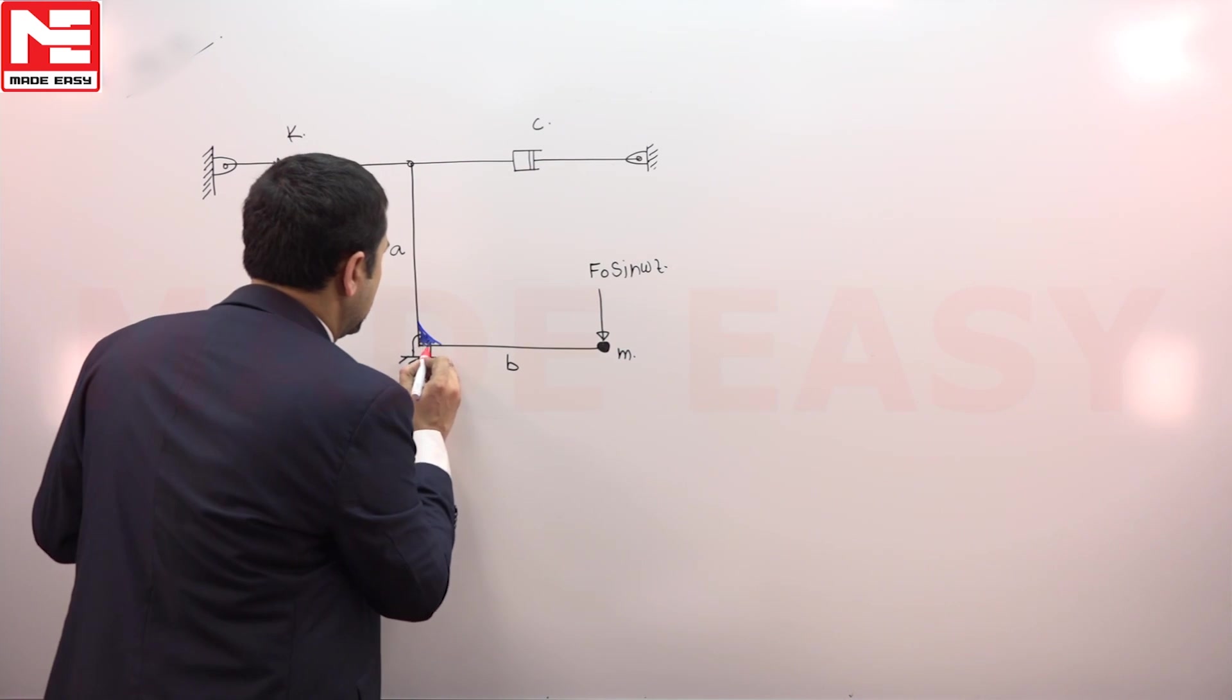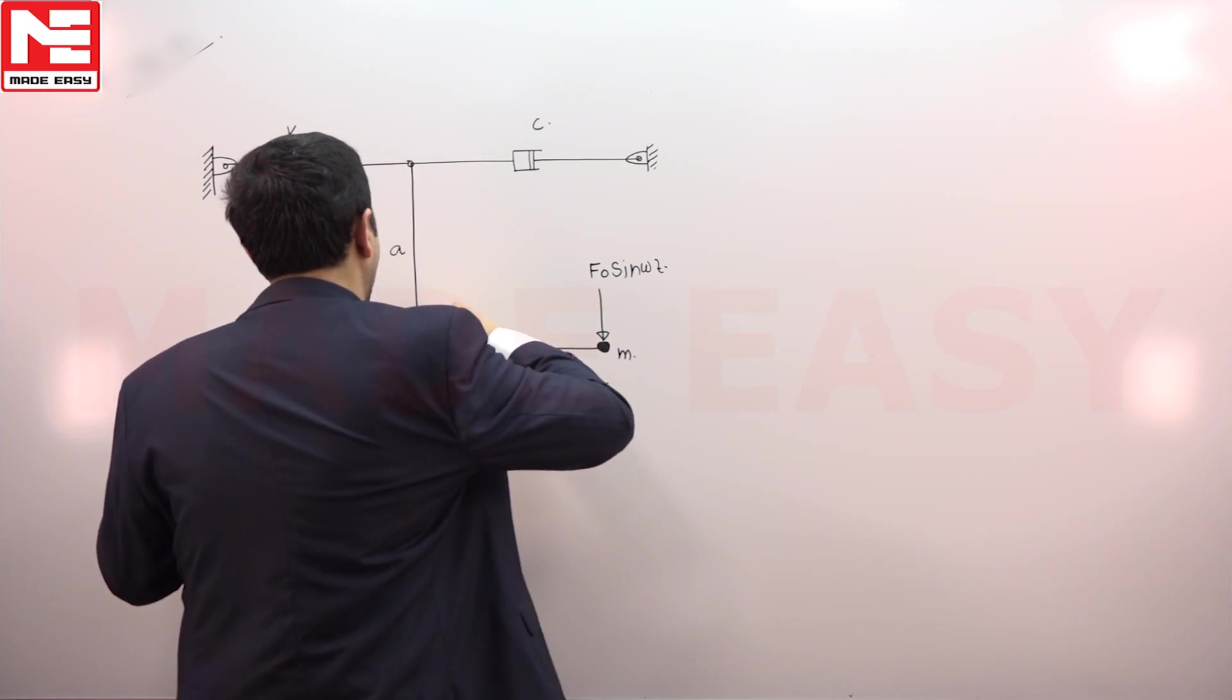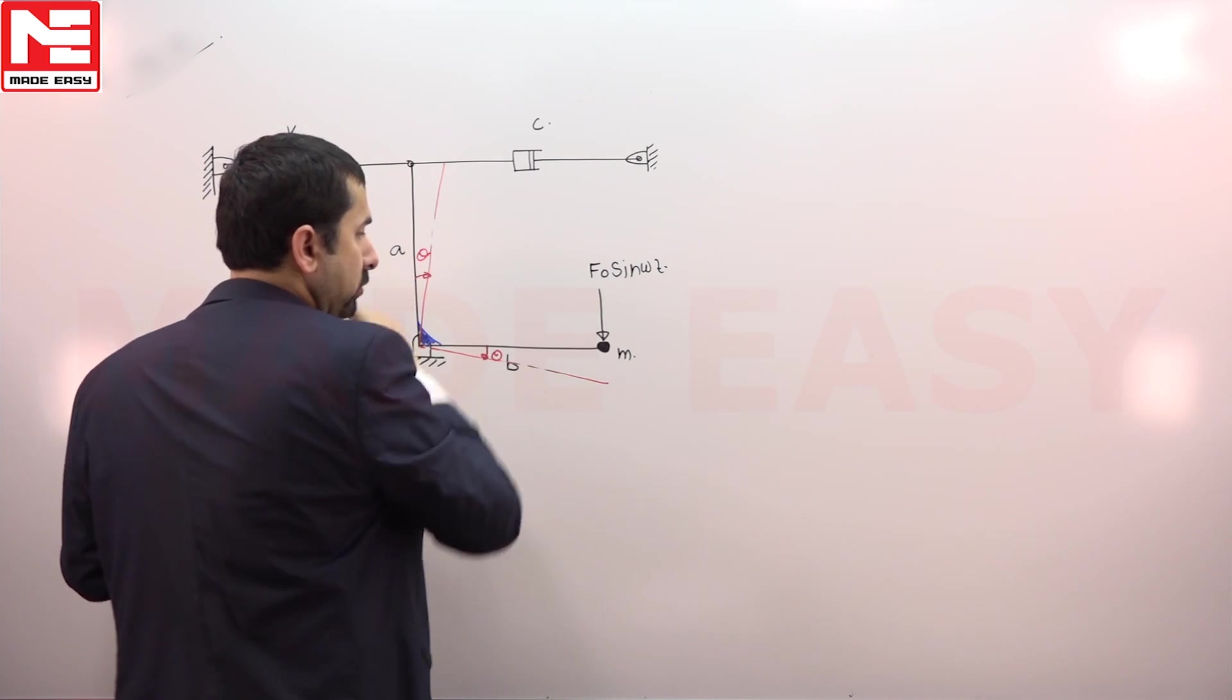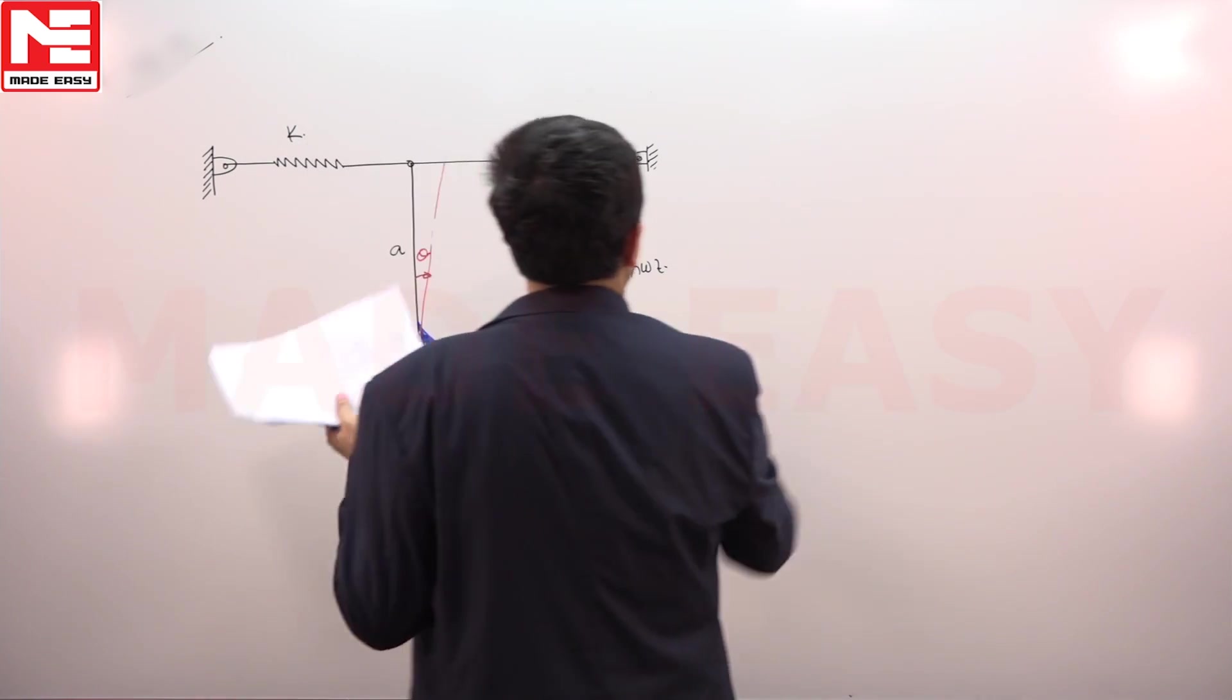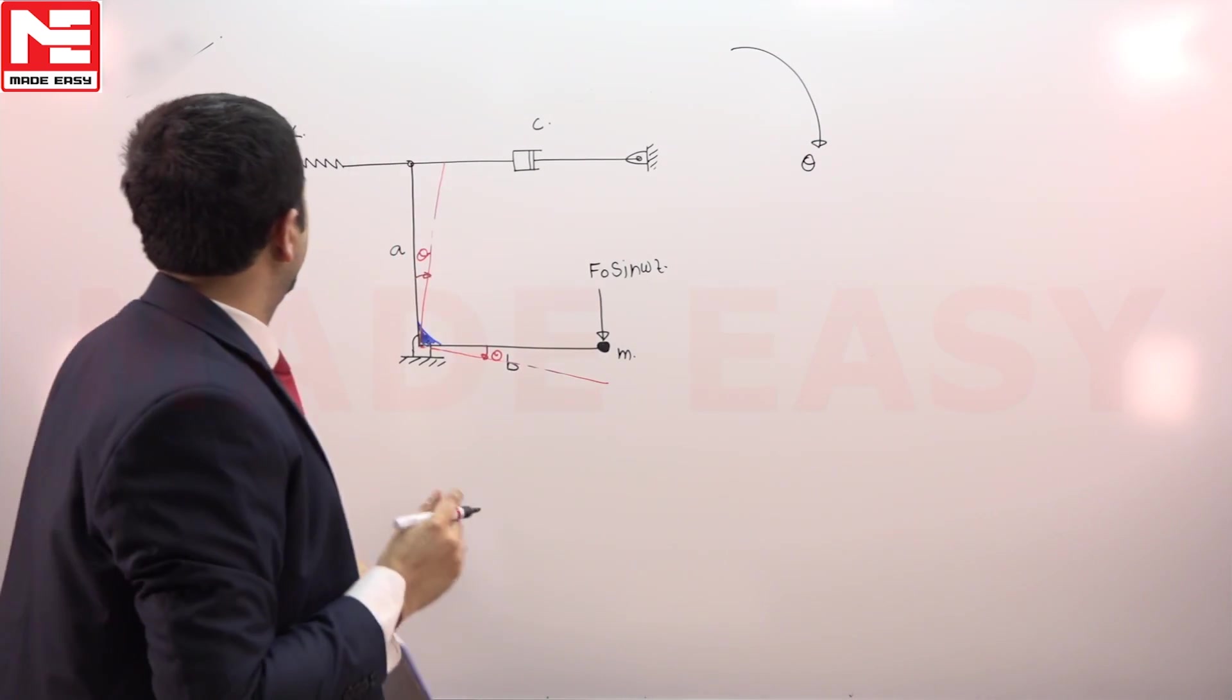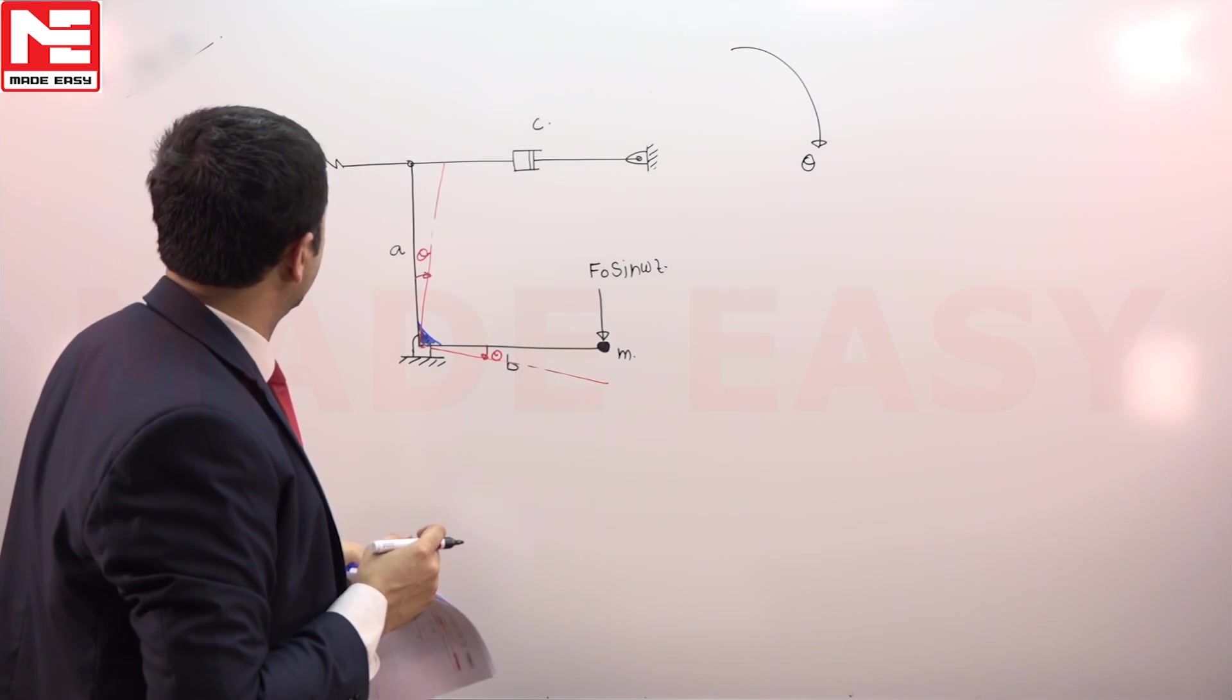Now we have to just shift it here theta. This will go here theta, and we have to see if theta clockwise—how much torque is coming here. So this k will be displaced by a theta, so the force will be k into a theta.